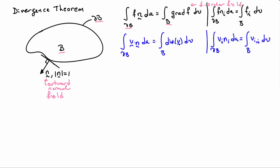If I have a vector field v I can write it as follows: if I have the integral over the surface of v dot n d a that then becomes the integral of the divergence of v over the body b. Initially v i n i is v dot n and the divergence is v i comma i.